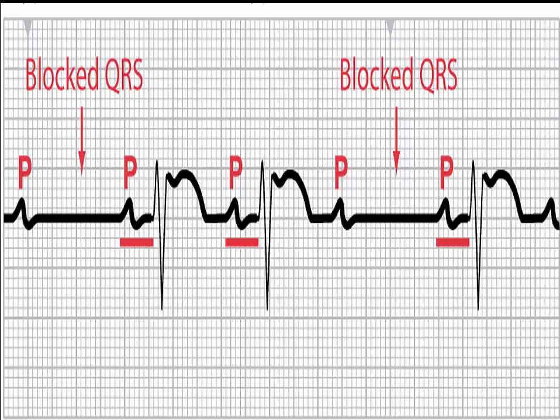Second degree heart block type 2, known as Mobitz II, is also a disease of the electrical conduction system of the heart. It is almost always a disease of the distal conduction system located in the ventricular portion of the myocardium. This should be treated with immediate transcutaneous or transvenous pacing because there is a risk that electrical impulses will not reach the ventricles. This rhythm can rapidly progress to complete heart block and is clinically significant for ACLS.